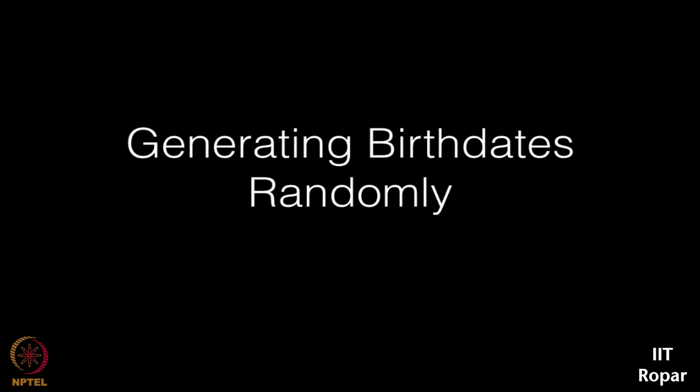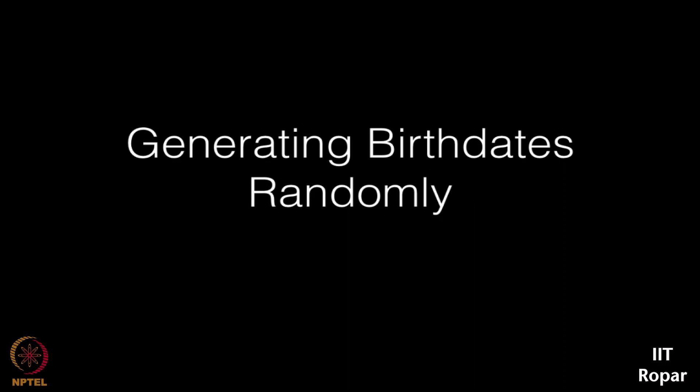So now the question arises: how can we generate birth dates randomly? Birth date will be generated according to the birth month. As you know, some months comprise of 31 days and some months comprise of 30 days. We have January, March, May, July, August, October and December — they comprise of 31 days.